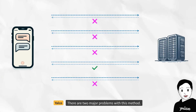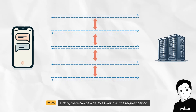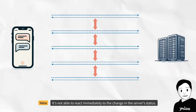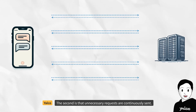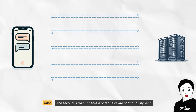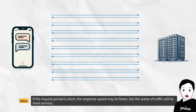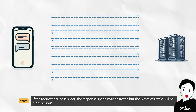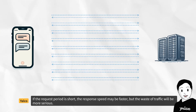There are two major problems with polling. Firstly, there can be a delay as much as the request period — it's not able to react immediately to the change in the server's status. The second is that unnecessary requests are continuously sent. If the request period is short, the response speed may be faster, but the waste of traffic will be more serious.